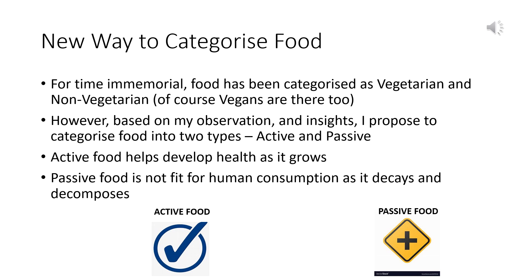Active food helps develop health as it grows. Passive food is not fit for human consumption as it decays and decomposes. If you take a raw vegetable and leave it outside — say an onion — you will see stalks start coming out. Same with potato. But if you take a passive food like a piece of meat or paneer and leave it outside, it starts decaying and decomposing. So passive food is the one which decays or decomposes when left outside, while active food is one that grows — it is living and active.